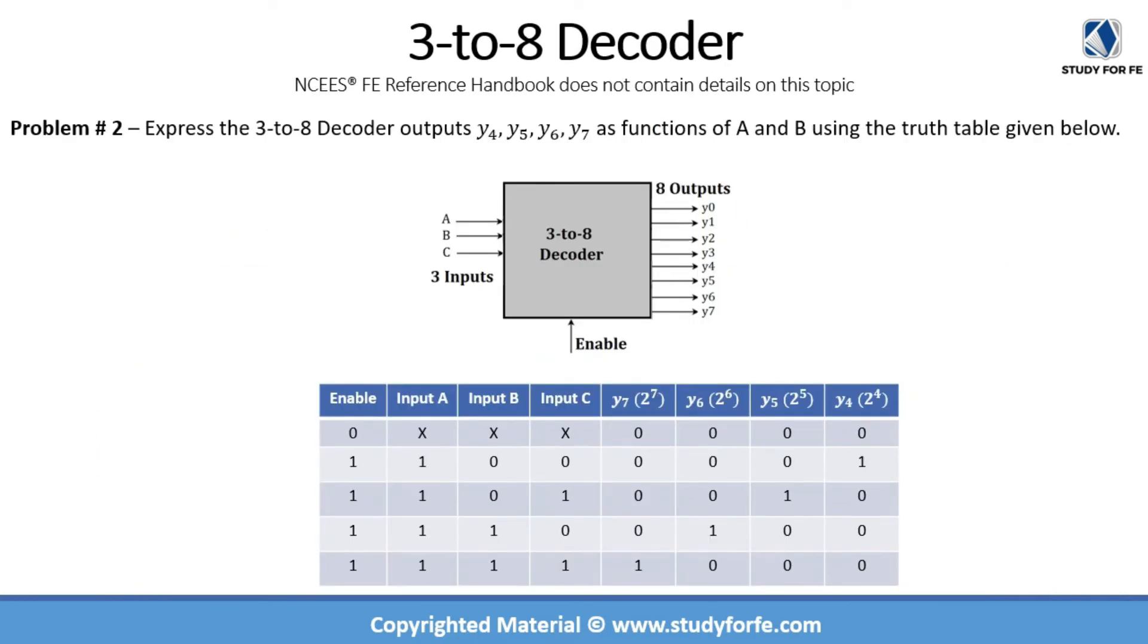Let us now do a practice problem with the 3 to 8 decoder. We are being asked to express the outputs y4, 5, 6, and 7 as functions of A, B, and C using the truth table, which is given below. So this is the truth table. And I have just included y4, y5, y6, and y7 because that's what the question is asking. So let's start with y4. You can see y4 will basically correspond to this entry, this combination, when the enable is 1, so we can use E as is. Input A is 1, so we can use A as is. And B and C are 0, so we have to use B bar and C bar.